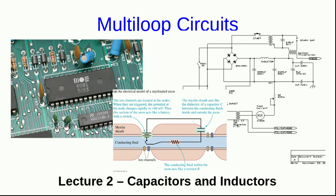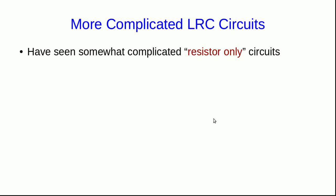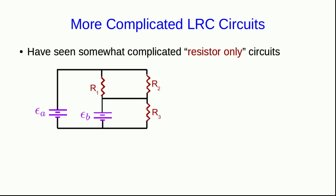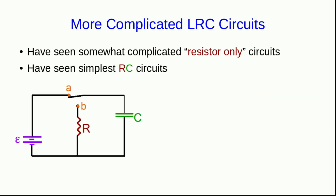Hello, and welcome to lecture two of multi-loop circuits in PHYS 12.04. We've seen the basics of how capacitors and inductors behave in circuits, now we're going to look at them in slightly more complicated circuits. We've spent a fair bit of time on resistor-only circuits, simple ones and, last video lecture, more complicated ones, and we've also seen the simplest RC circuits — circuits with resistors and capacitors.